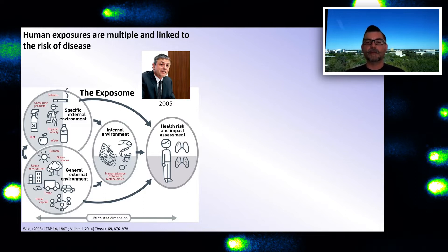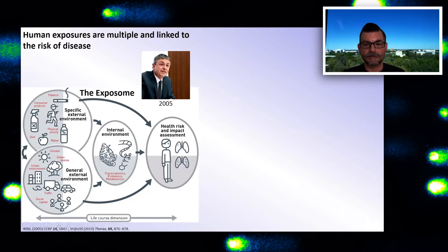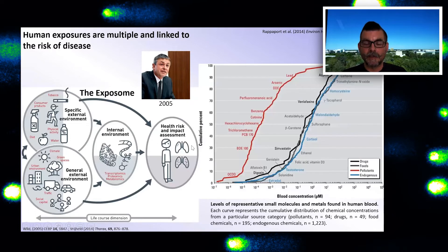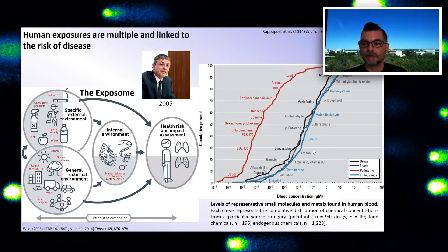The idea is that health risk and impact is due to the totality of exposures across the lifespan. These exposures can come from the specific or general external environment, the internal environment, and these combine to give a health risk assessment. The environment is obviously very complicated, as illustrated by just the representative small molecules and metals found in blood — we're looking at thousands of chemicals.